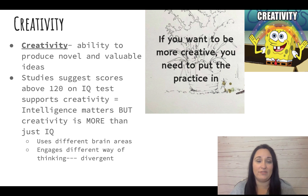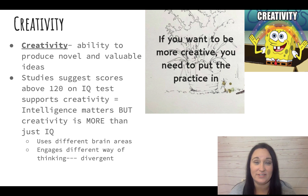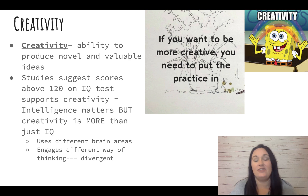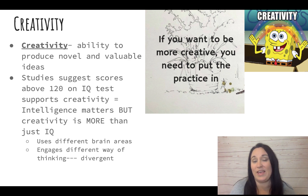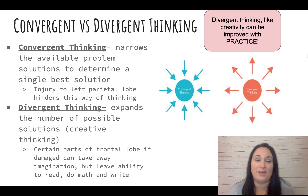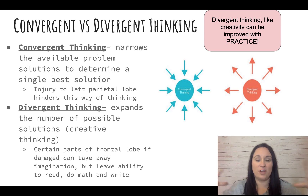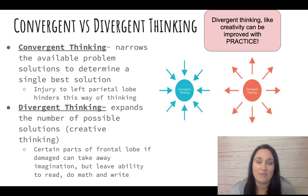Creativity is part of thinking — it's our ability to produce novel and valuable ideas. There is a correlation with creativity and intelligence, but intelligence alone doesn't make someone creative. It engages different brain areas and it is a different way of thinking. There are two ways of thinking: convergent and divergent. Convergent means to come together, meaning finding a single solution to a problem. The multiple choice on an AP psych exam, where there's one answer, that's convergent thinking.